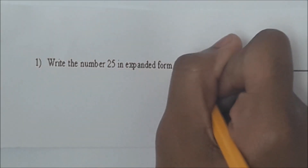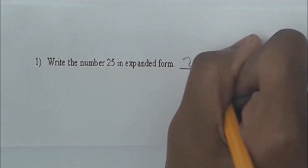Read number 1, Priyana. Write the number 25 in expanded form. How would you write 25 in expanded form? 20 plus 5. Write it on the line. Where do you get the 20 from? The 2 is in the 10's place — 2 tens. And the 5 is 5 ones.